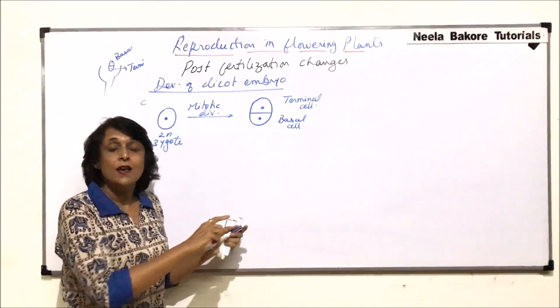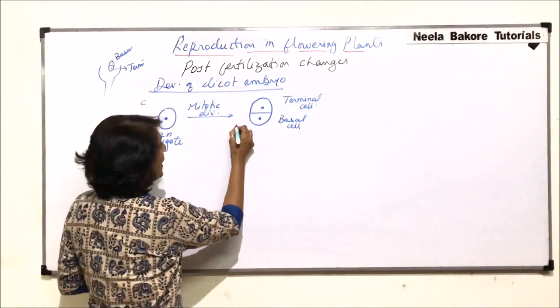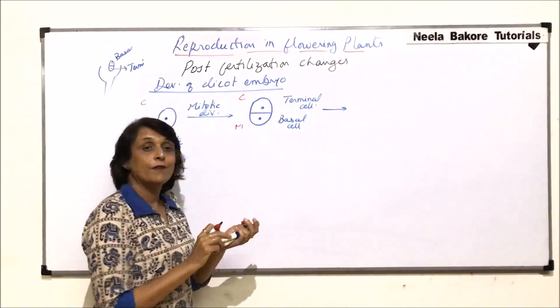That is why whenever we talk about this process we don't use upper and lower; we give reference to the micropyle or the chalaza end. The cell which is towards the micropyle is the basal cell and the one towards the chalaza is the terminal cell.